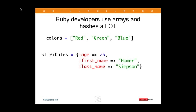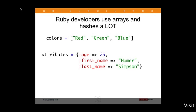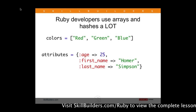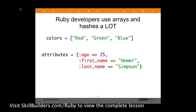Ruby developers tend to use arrays and hashes a lot. Arrays are just a comma-separated list of objects. We also use hashes or dictionaries — key-value pairs. So in this example, you have an age, a first name, and a last name. There's a character there — an equal sign and a greater-than sign — and what you're looking at is what we call a hash rocket in Ruby. Whenever you see that in Ruby, you're working with a hash. We tend to use hashes a lot for parameters that we send to our methods.